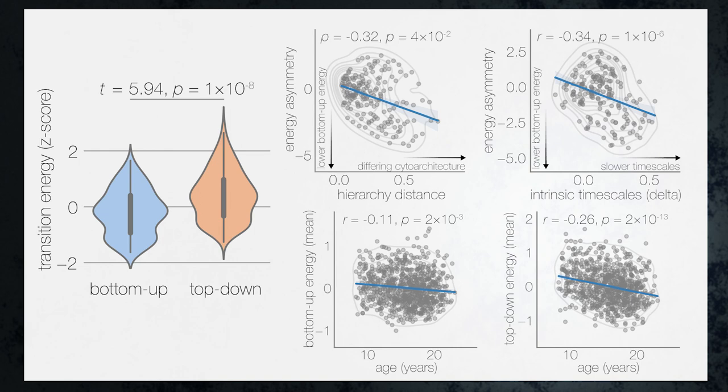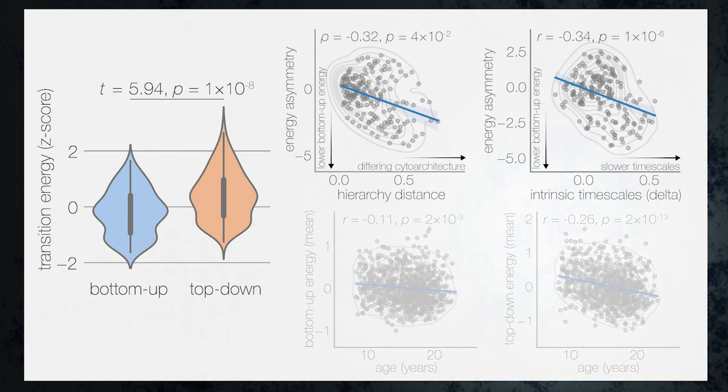In turn, this tells us that during development, the connectome may actually be refining towards a balance between bottom-up and top-down signal propagation.